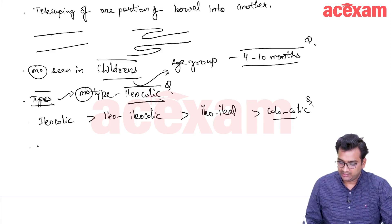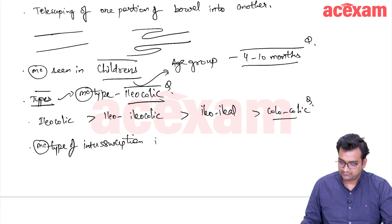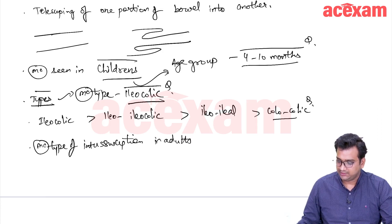The most common type of intussusception in adults is colocolic.